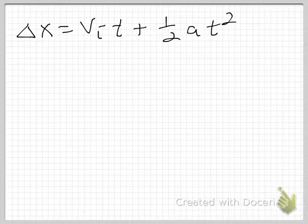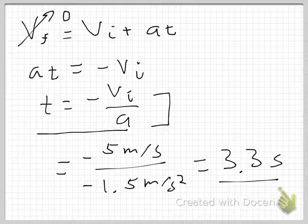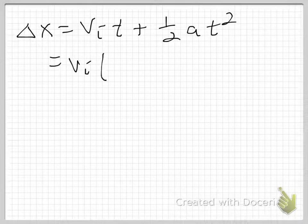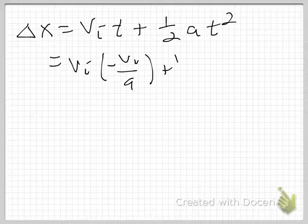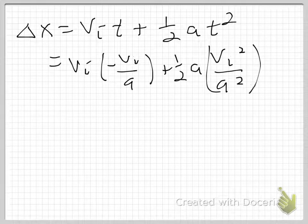I think it's more instructive to run through with symbols first and get this in a simpler format — it will show you the physics. Remember what T is: T equals negative V_initial over A. So plugging that in: delta X equals V_initial times (negative V_initial over A), plus one-half·A times (negative V_initial over A) squared. When I square T, the negative goes away and I get V_initial squared over A squared.